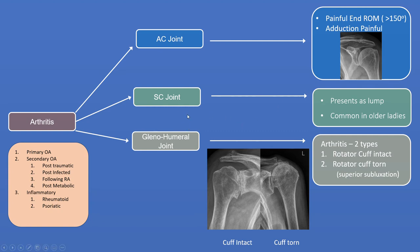Sternoclavicular joint arthritis is also relatively common. It occurs in older people, but is noticed more in older ladies because they wear lower necklines and with a necklace suddenly see a lump at the sternoclavicular area and worry there's something more sinister. It's usually benign and quite common.